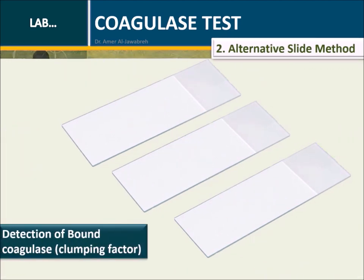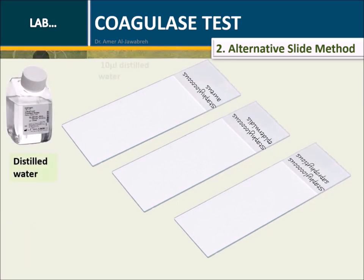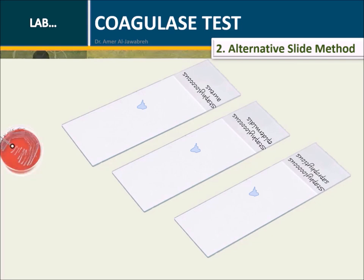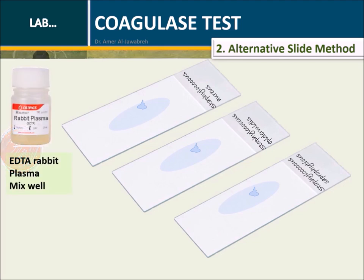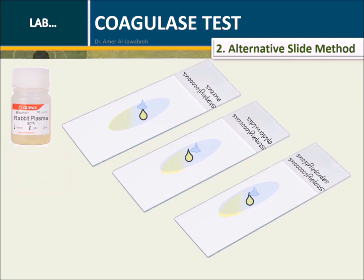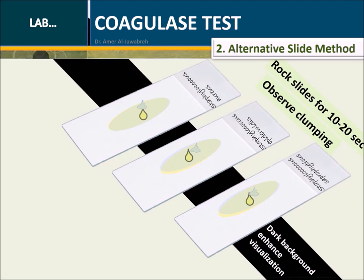Alternative slide method: Label slides. Add 10 microliters of distilled water on each slide. Emulsify a loopful of colonies into the drop of distilled water on each slide. If the bacterial suspension shows clumps (auto-agglutination), stop and perform the tube method instead. Mix plasma well, place 3 microliters of plasma on each slide, rock slides for 10 to 20 seconds, and observe for visible clumps for up to one minute on a dark background.